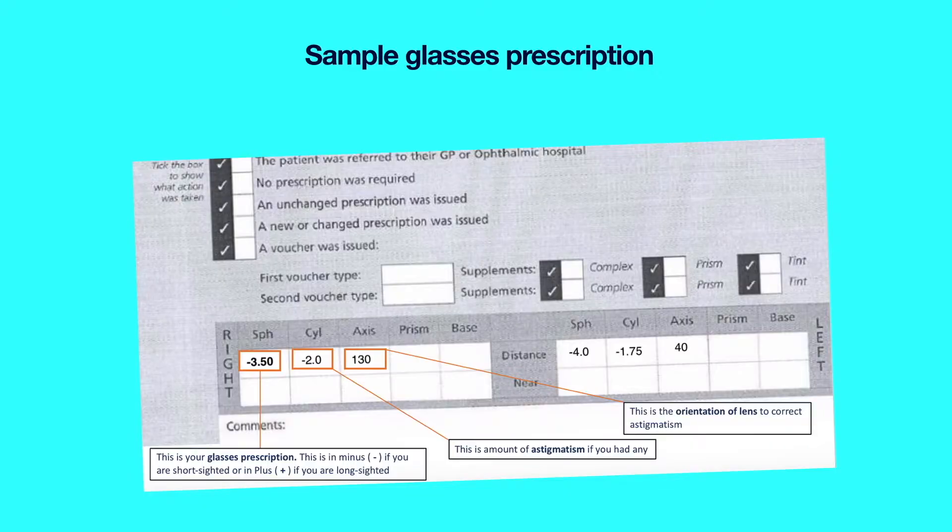So you have a better understanding of your prescription, this is what a glasses prescription looks like. The right prescription is often on the left-hand side of the page and vice versa.